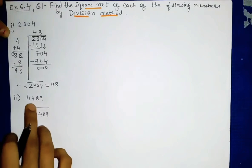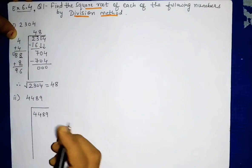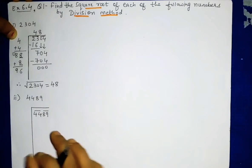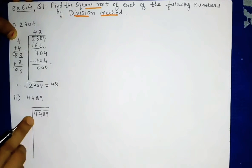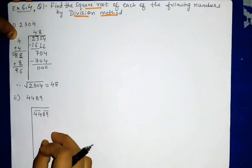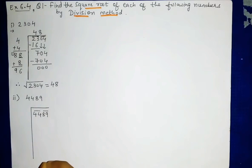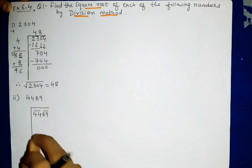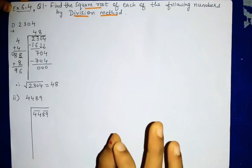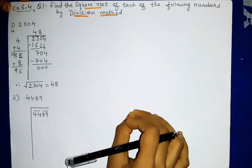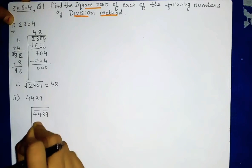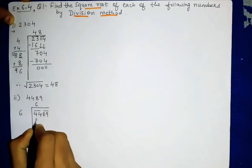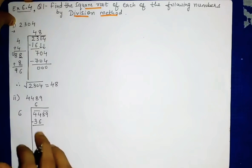Now the second question is 4489. Again we follow the same procedure. We draw bars starting from the ones place, making pairs: '44' and '89'. Now we start our division. For the first pair 44, we need a perfect square less than or equal to 44. Checking: 6×6=36, 7×7=49. Since 49 is greater than 44, we start with 6×6=36.